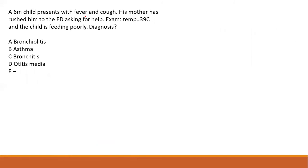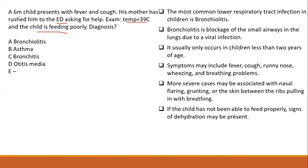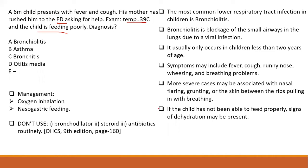A six-month-old child presents with fever, cough, and poor feeding, with a temperature of 39 degrees. This is a lower respiratory tract infection. The most common one in children of this age is bronchiolitis, normally caused by respiratory syncytial virus. Management involves oxygen and nasogastric feeding due to poor feeding. The answer is A.